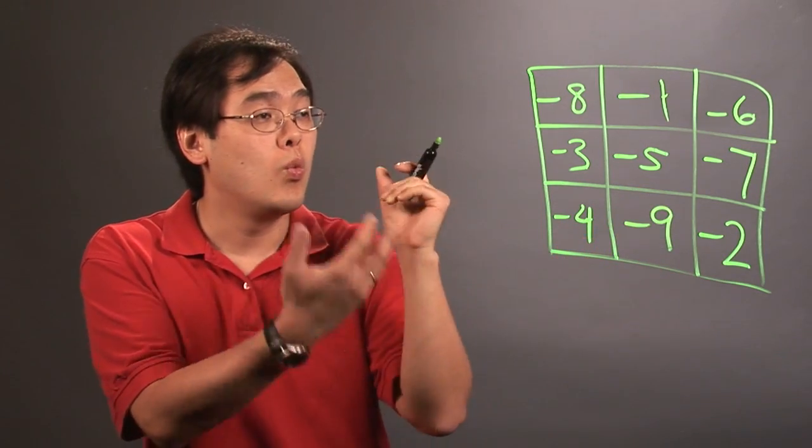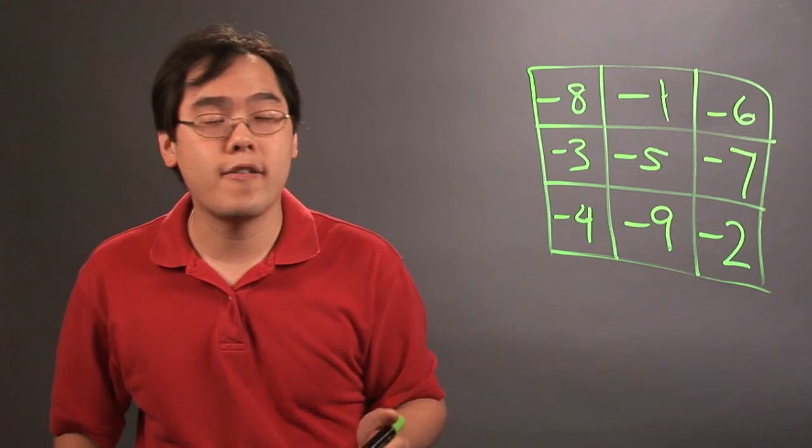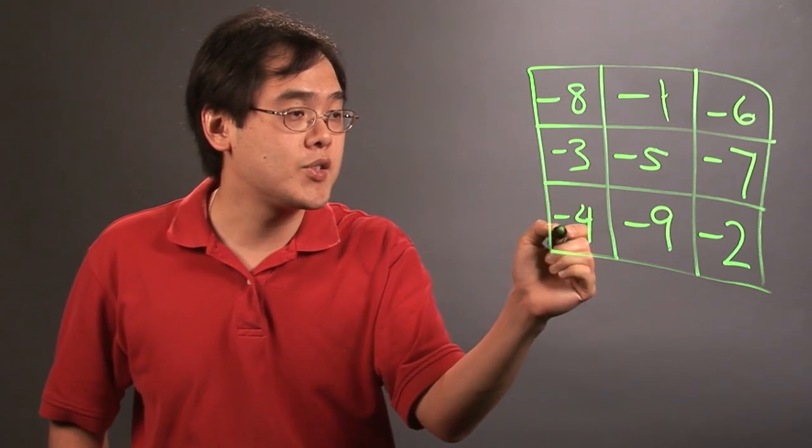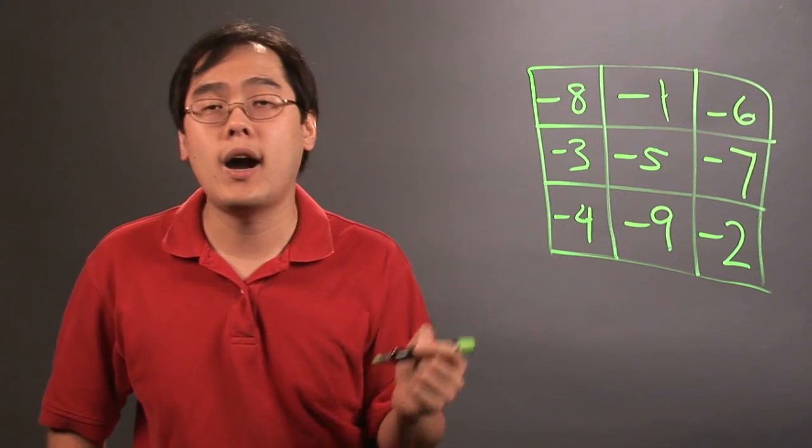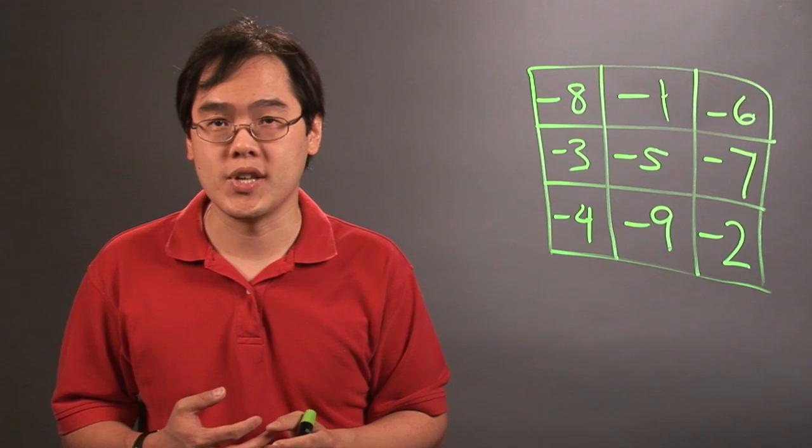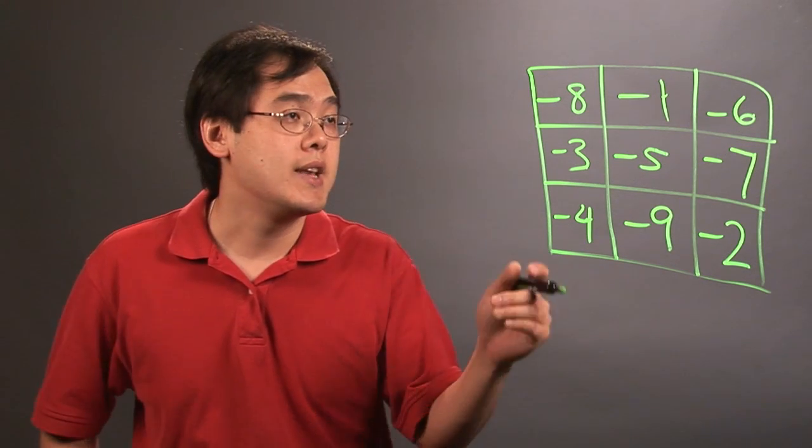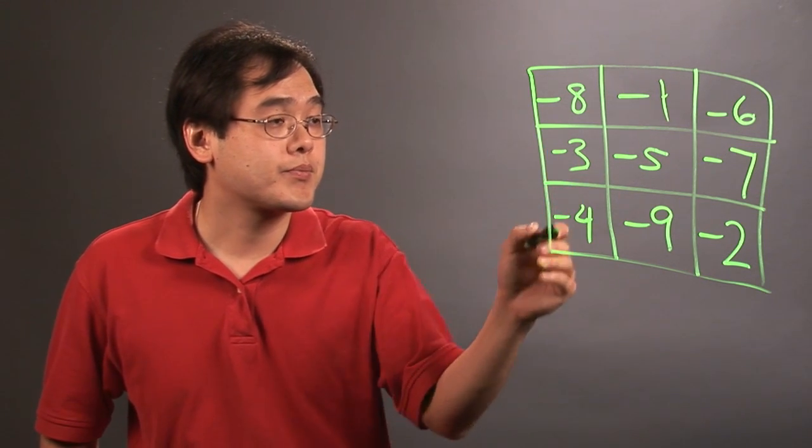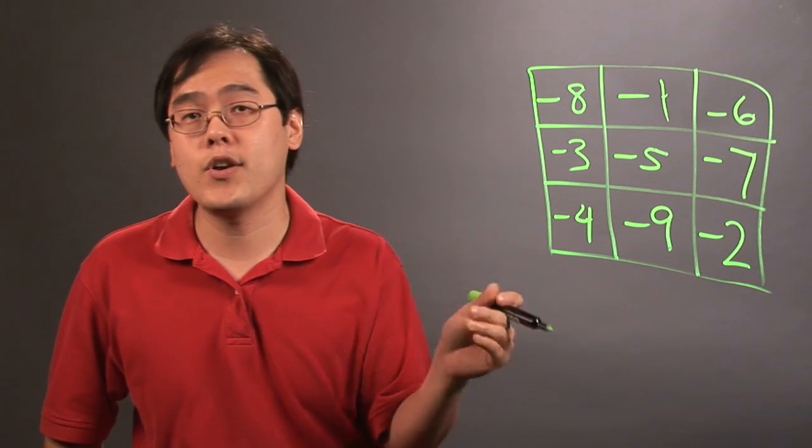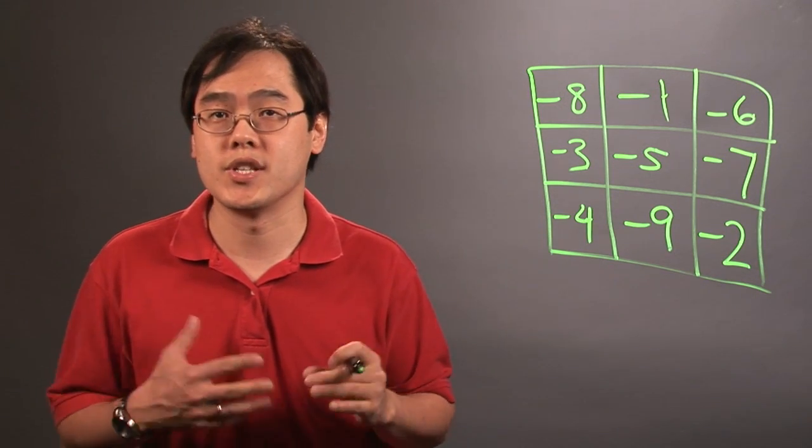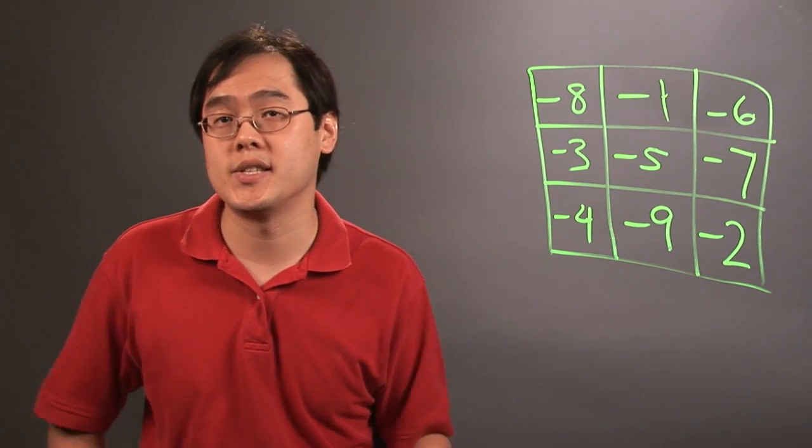Now what you can do on your own is verify that the sum of each row, column, and diagonal is going to give you the same sum because that's what a magic square does. Now as you can probably tell, the sum of every row, column, and diagonal is going to give you the sum of negative 15, which verifies that it's a magic square.